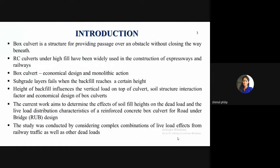Box culverts are four-sided structures, otherwise known as short-span bridges, providing passage over an obstacle without closing the way beneath. They are mainly used over major bridges for crossing obstacles with a span of less than or equal to 6 meters. Box culverts for road-under-bridge (RUB) design provide overhead passages for trains and highways. Increasing population and traffic problems on Indian railways have paved the way for constructing road-under-bridge and road-over-bridge structures.